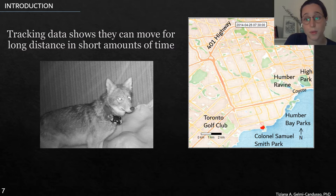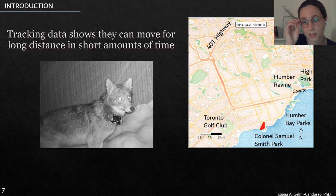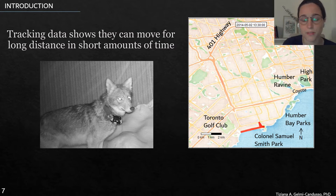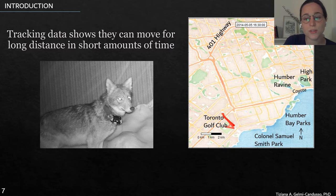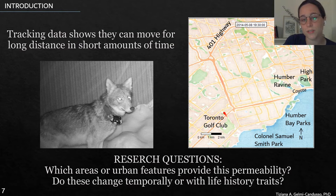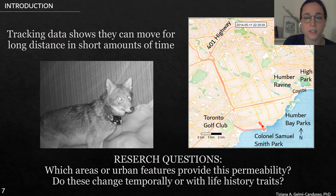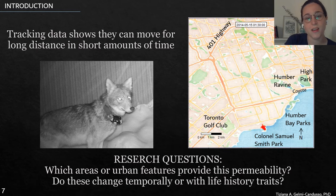And if you think about it, we would always expect this to be a great barrier for the animals. So the question remains: how do they move across the city? Which areas or urban features provide this permeability?